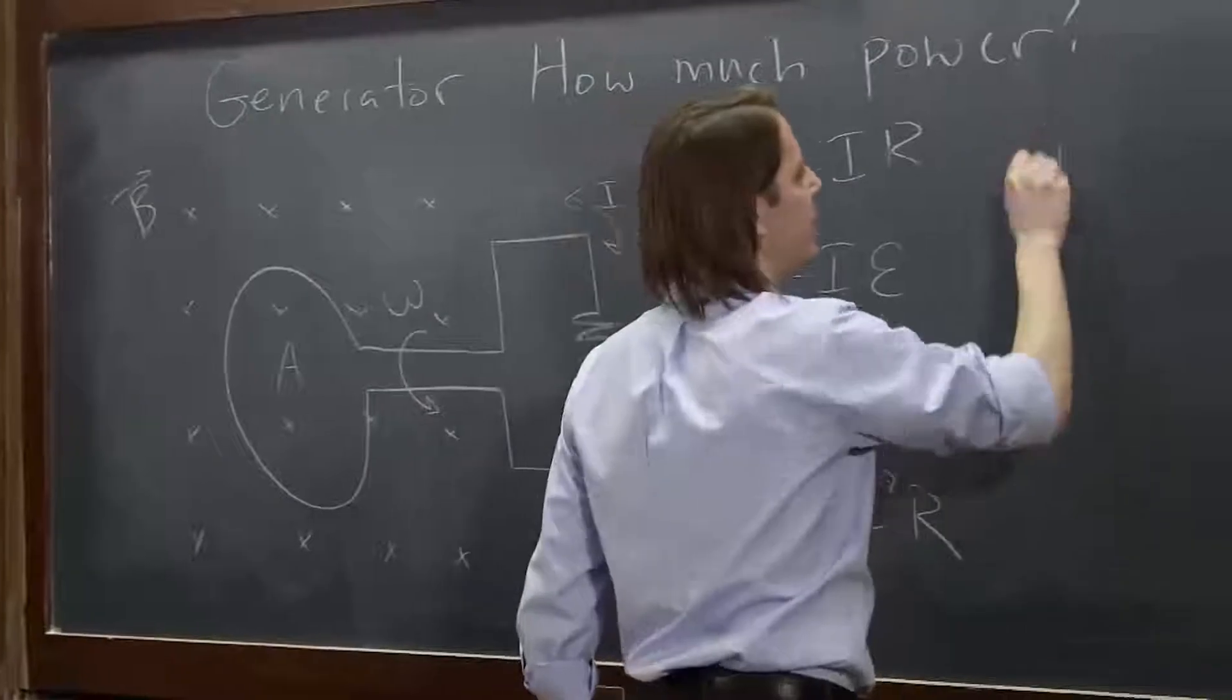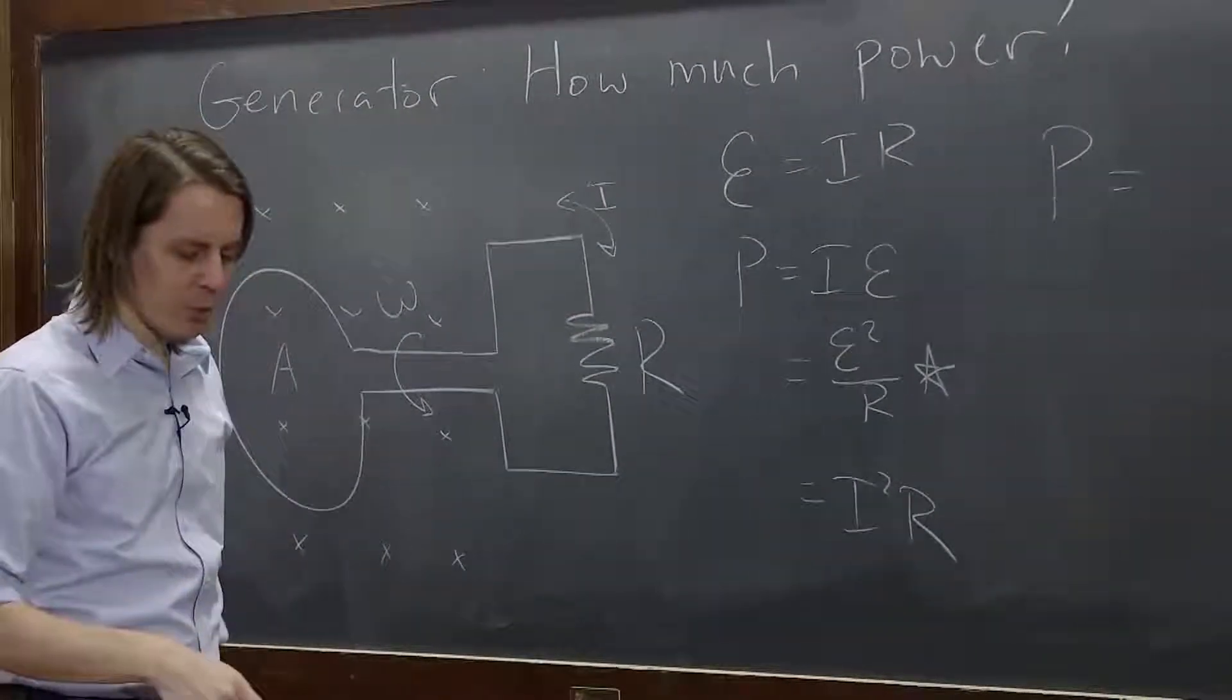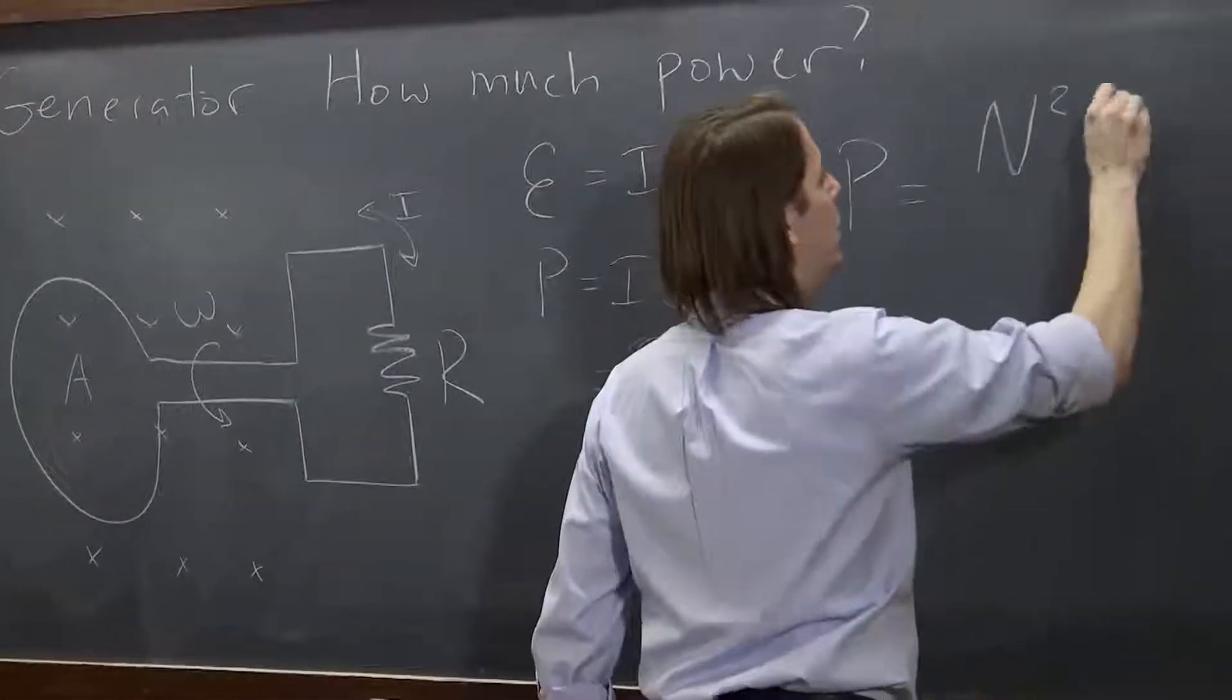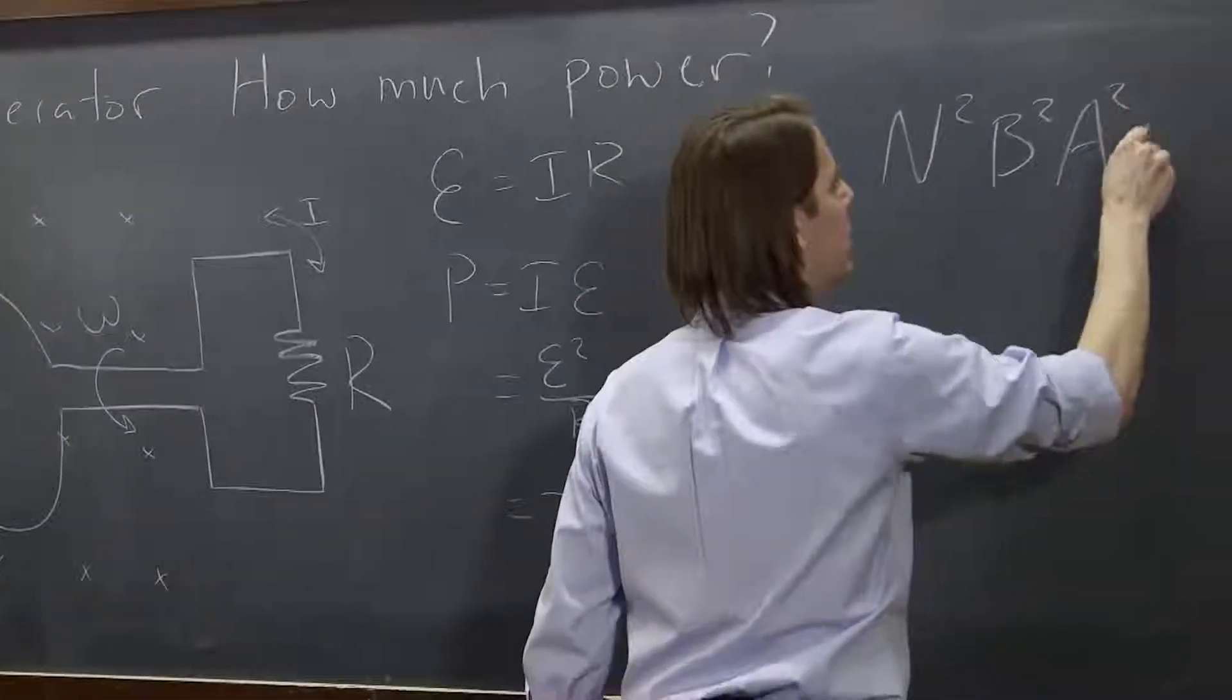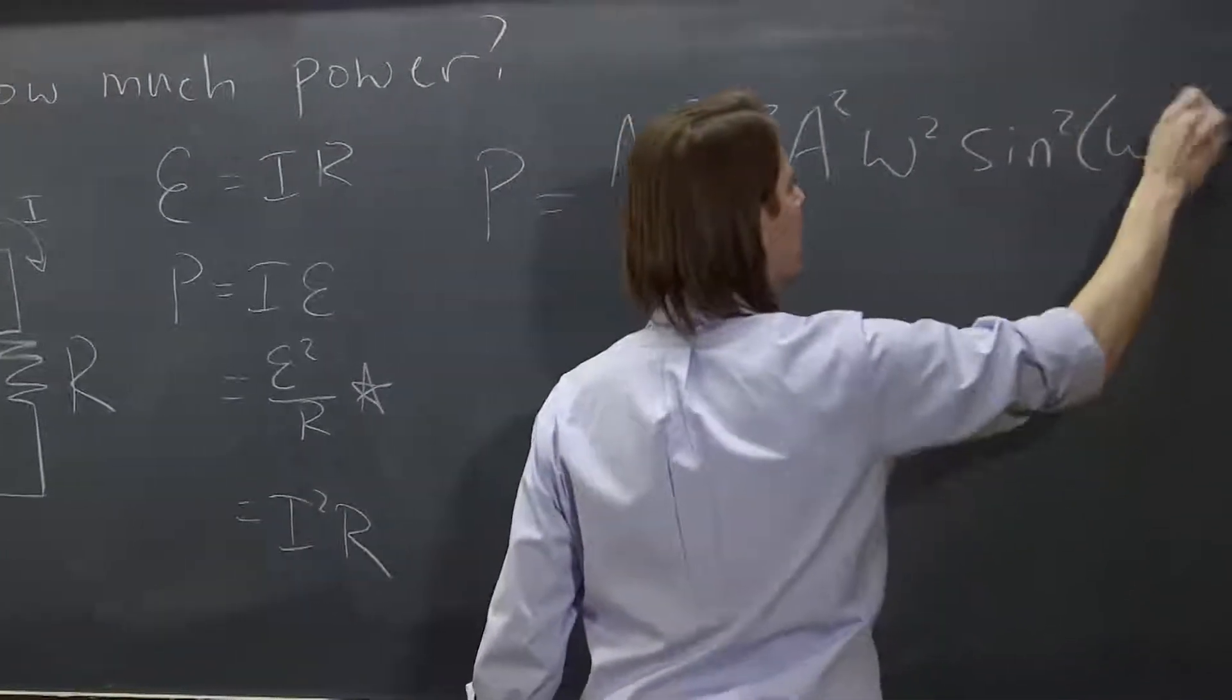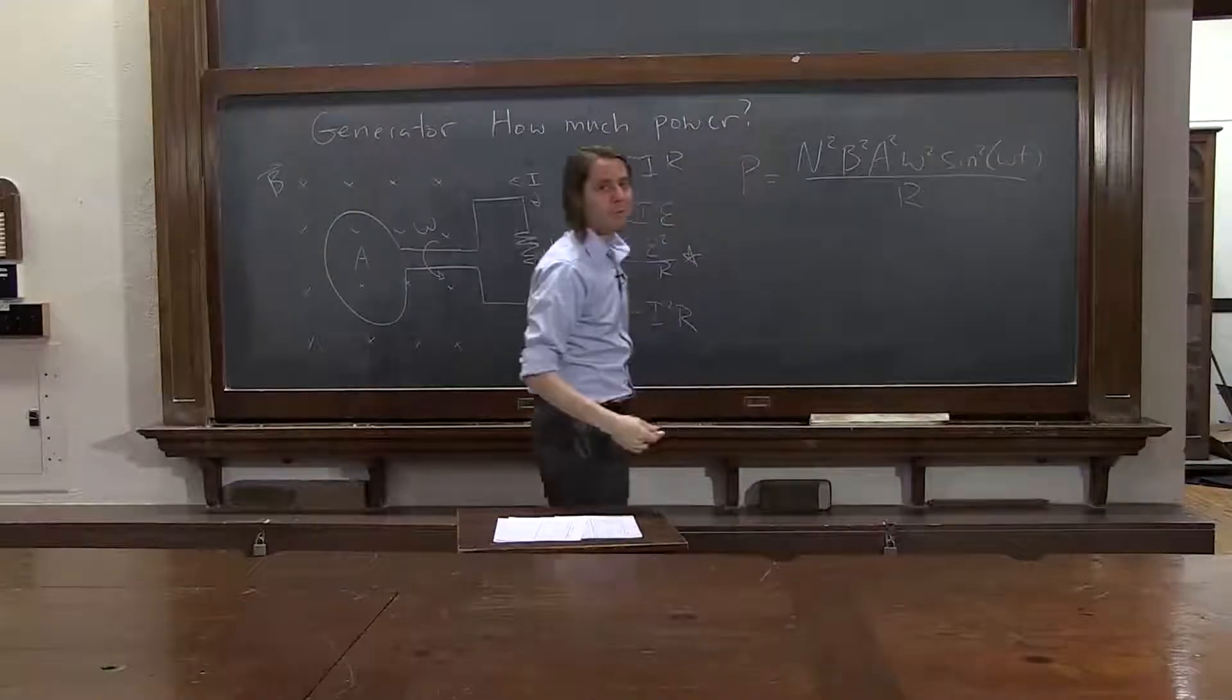OK, so P in this case would be, let's see, the EMF squared is basically every one of these factors squared. N squared, B squared, A squared, omega squared, sine squared omega T over R. That's basically it.